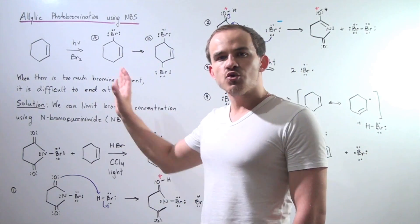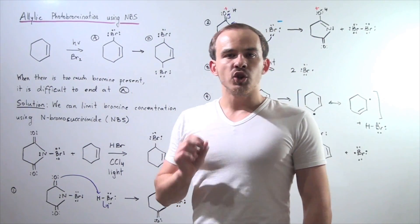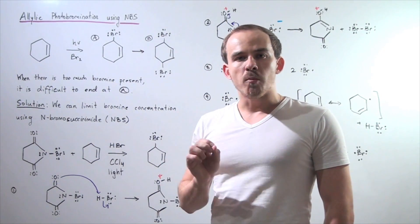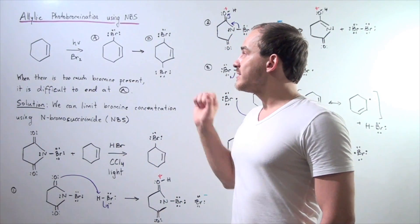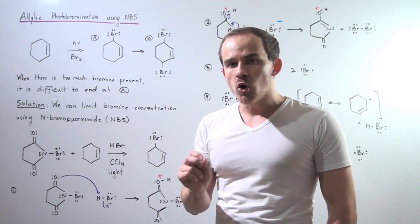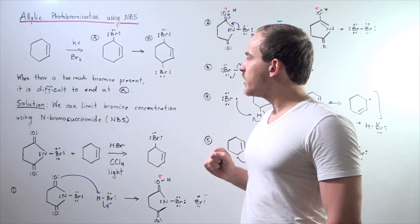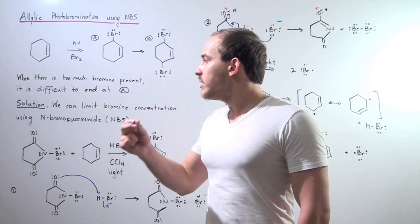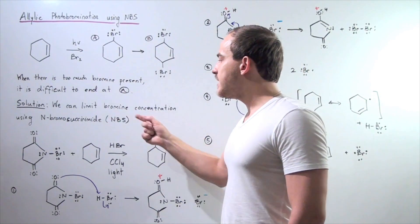What is one solution to our problem? Well, one solution is to limit, to decrease the amount of bromide or bromine present in our mixture. In other words, if we don't have enough bromine reacting in our reaction, A will not convert to B. A will stay at A. So one solution is to use NBS.